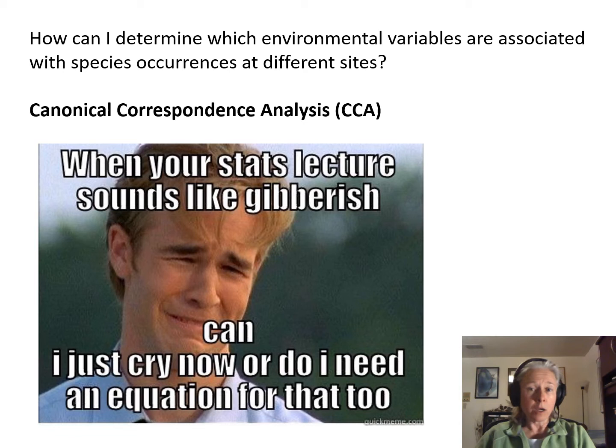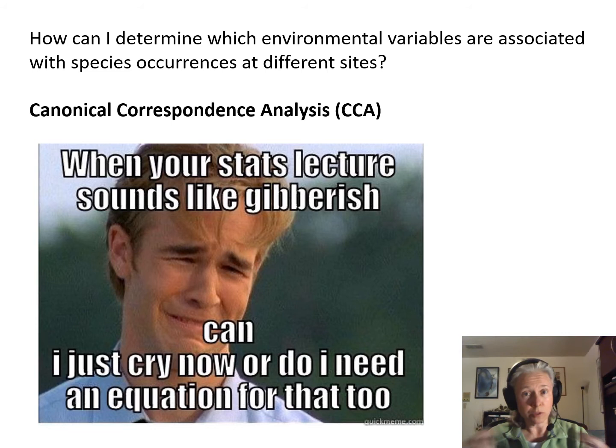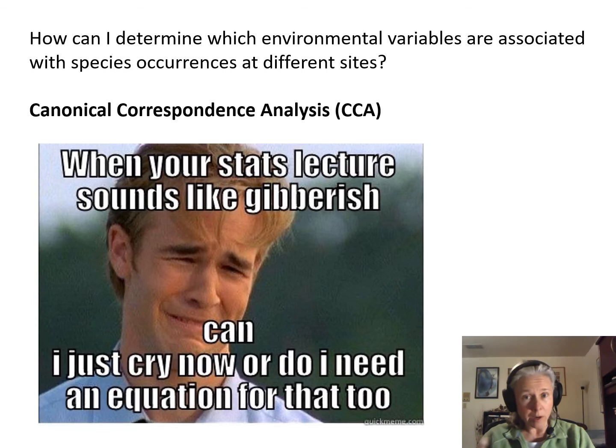A constrained ordination uses environmental variables in the construction of an ordination in a simultaneous approach rather than a two-step approach. So you're making use of both a site-by-species data set and a site-by-environment data set at the same time, as opposed to the two-step process that we did, for example, in the lesson on PCA and RDA. These constrained approaches are called constrained because the positions of the samples in the ordination are constrained by environmental variables.